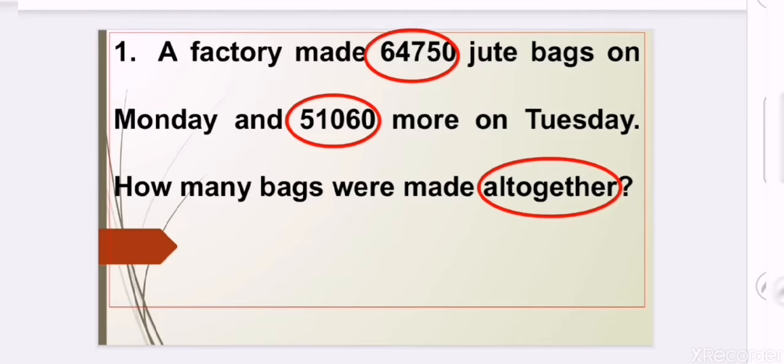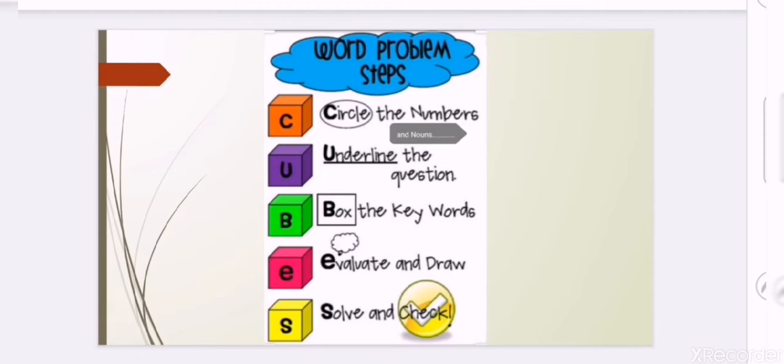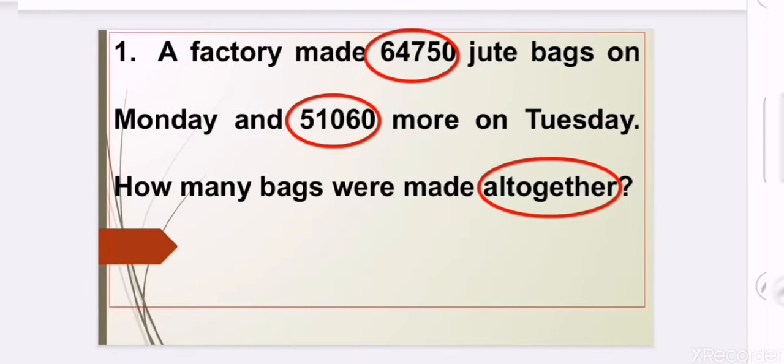Next step, B stands for 'box the keywords.' These are the keywords we already discussed at the beginning, which are very helpful while solving word problems and through which we can recognize which operation to apply. Here, the keyword 'altogether' is already circled, so we know which operation to use.